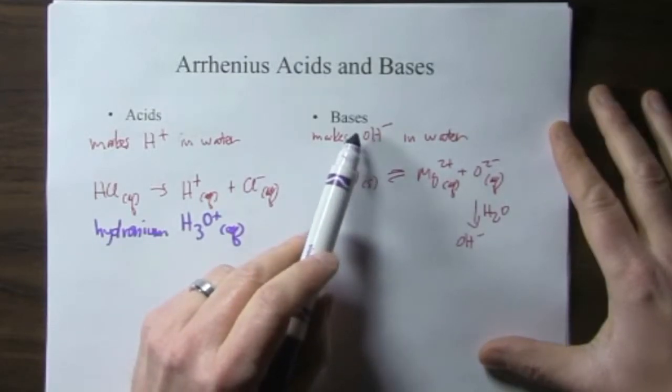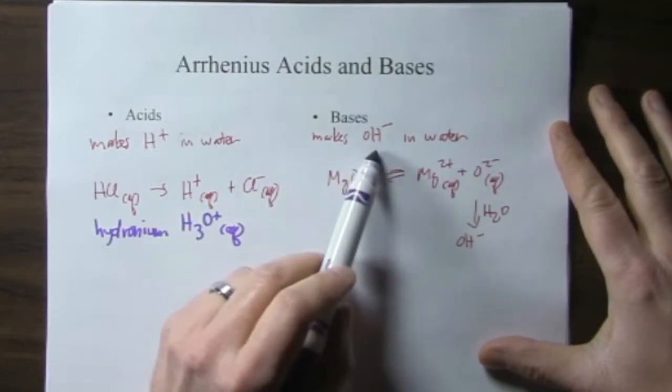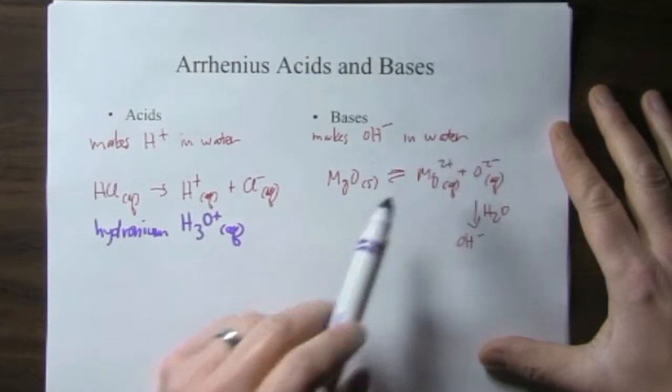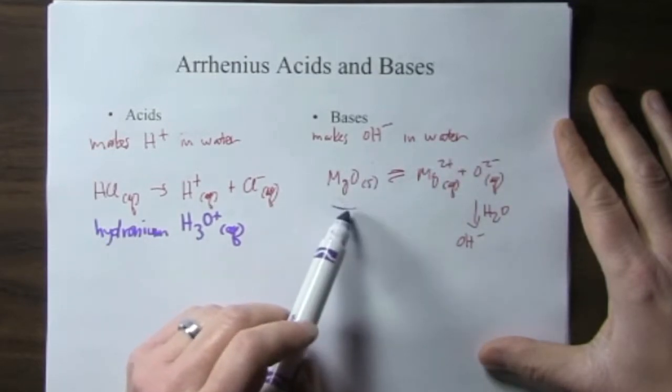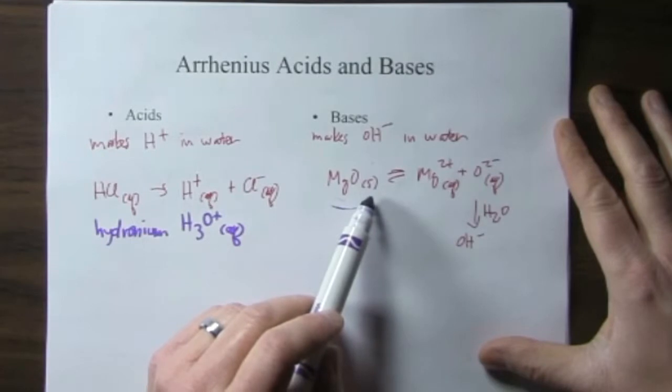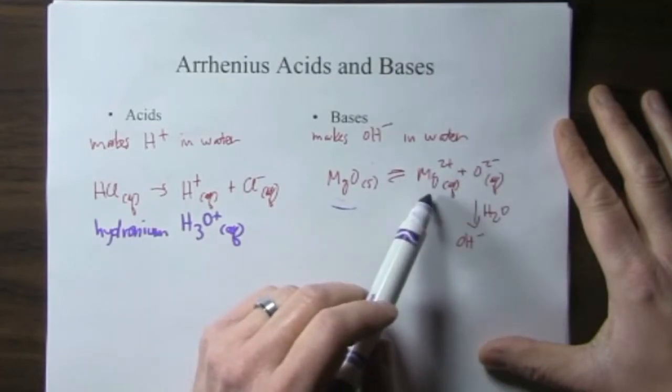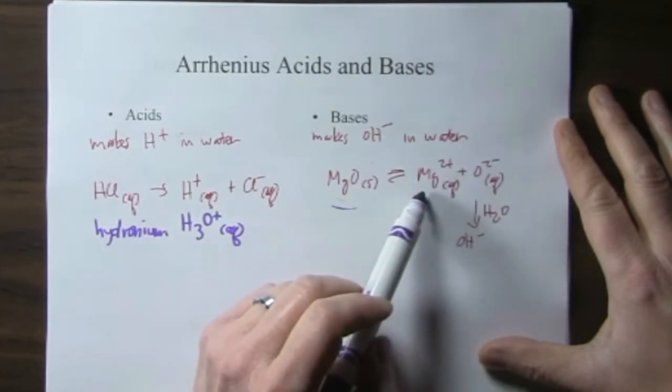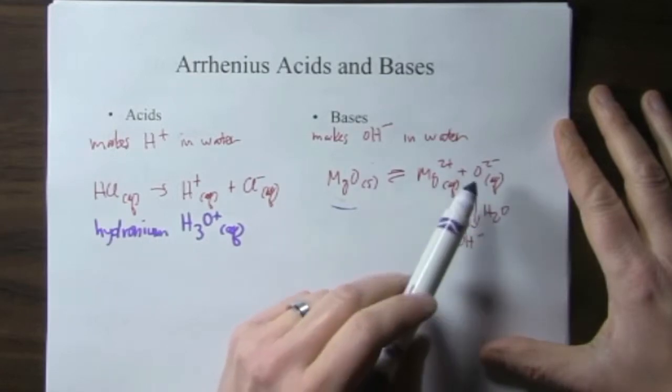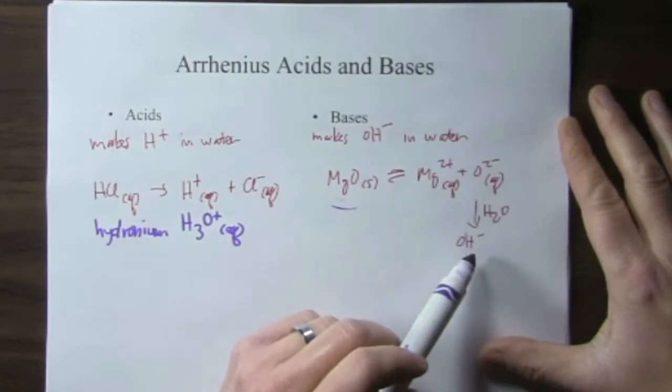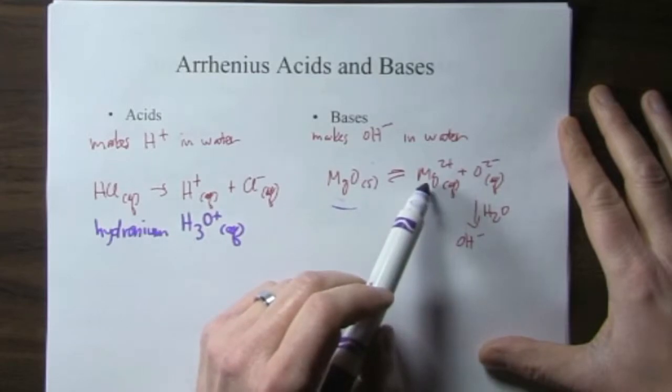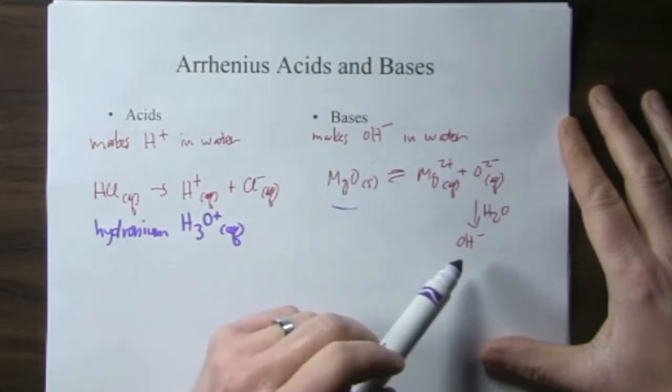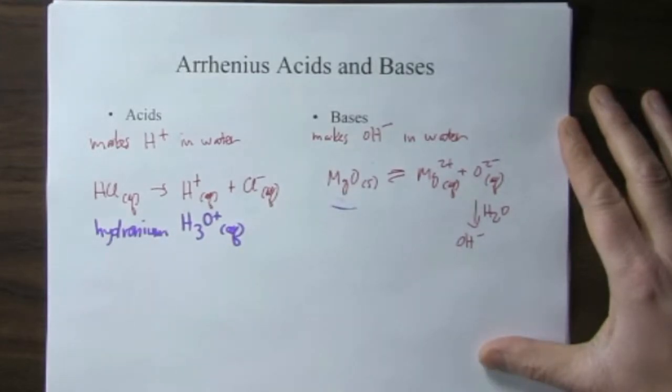The definition of a base is that a compound that makes hydroxide in water. An example of that would be if we put magnesium oxide solid, we dissolve it in water, it will dissociate into the ions, magnesium ions and oxide ions. Oxide ions aren't stable in water, they form hydroxide, so magnesium oxide in water will make hydroxide ion.